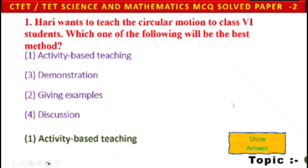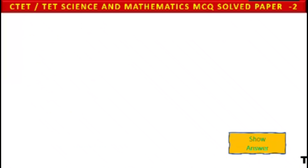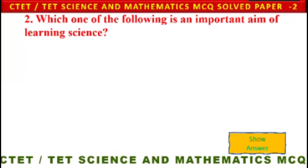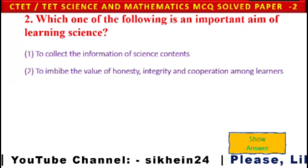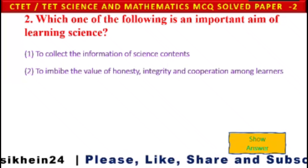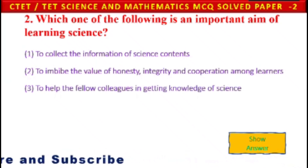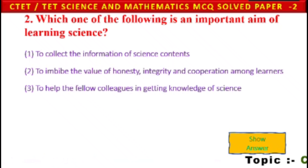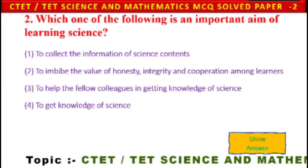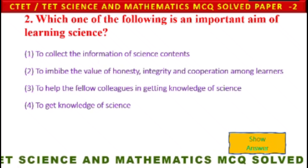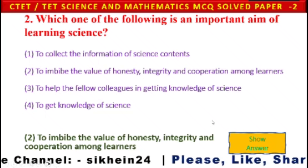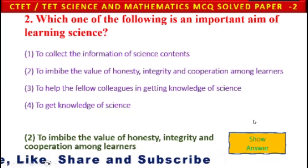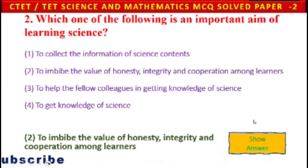Next question: Which one of the following is an important aim of learning science? 1) To collect information of science content, 2) to imbibe the value of honesty, integrity and cooperation among learners, 3) to help fellow colleagues in getting knowledge of science, 4) to get knowledge of science. Option 2 is the appropriate answer — to imbibe the value of honesty, integrity and cooperation among learners.